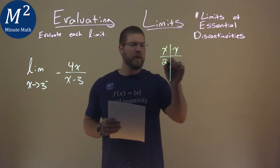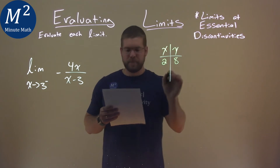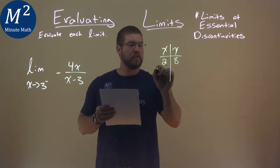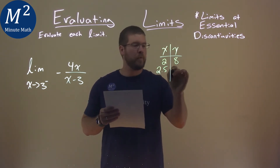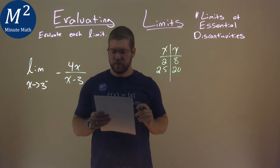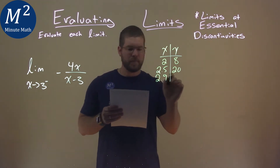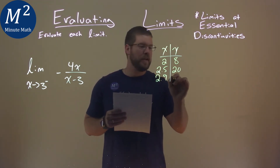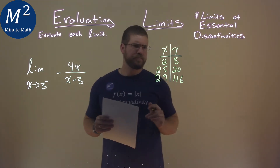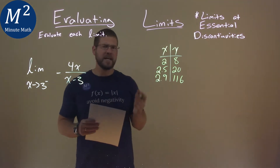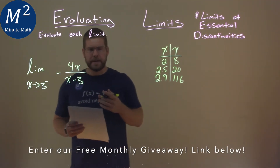If I put a 2 in for x, my output is 8. If I put a 2.5 in for x, my output becomes 20, and a 2.9 goes in and it's 116. So from the table's point of view, we're approaching positive infinity.